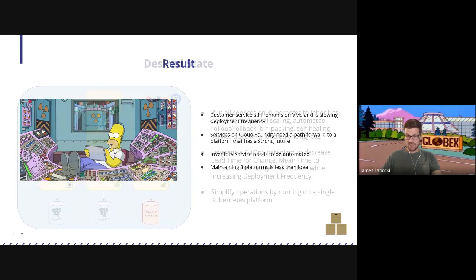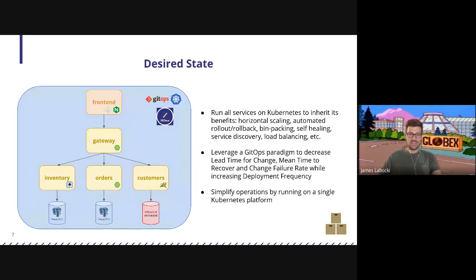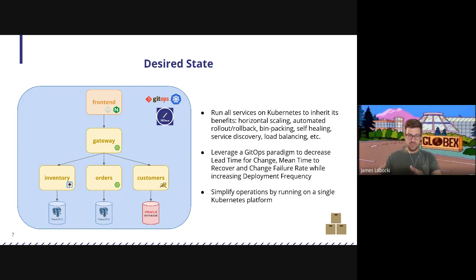I've invited the Conveyor team here because ultimately what I want to get to is this: I want all of my services running on Kubernetes so that I get the benefits — horizontal scaling, automated rollout and rollback, and all those great things Kubernetes gives me. I want to leverage a GitOps model to decrease my lead time for change, mean time to recover, and change failure rate, and increase my deployment frequency. I want to simplify my operations by putting all of this on a single platform that's easier to manage for my ops teams, and then I can start to plug in cloud services and do even more fancy cloud-native things in the future.